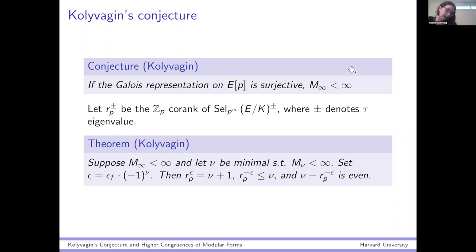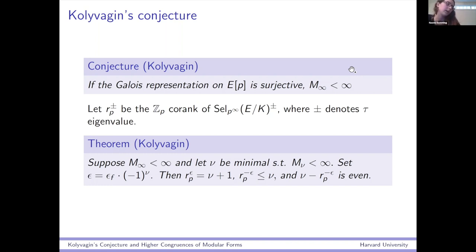Kolyvagin was thinking about the classical case of X_0(N). I'm not sure who first introduced the Shimura curve perspective — but it was not introduced by me, I'll say that.